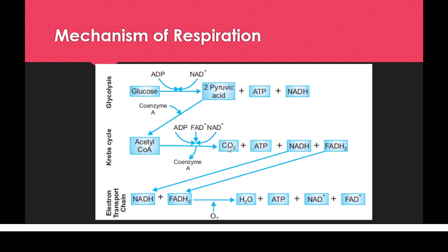In the Krebs cycle, CO2 and ATP are also released, along with ADP, FAD+, and NAD+. The NADH and FADH2 produced enter the electron transport chain. In the electron transport chain, these compounds lose their electrons to a series of electron carriers. During this transport of electrons, ATP is released. The hydrogen ions from FADH2 and NADH combine to form water molecules, and NAD+ and FAD+ are regenerated.